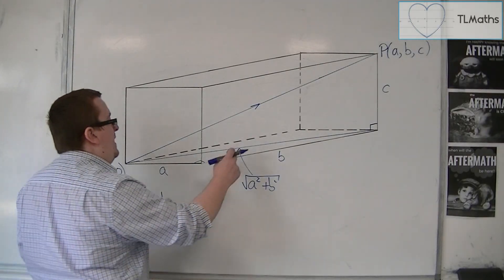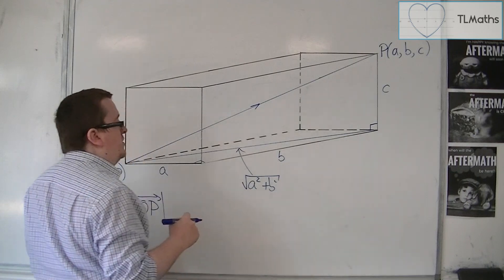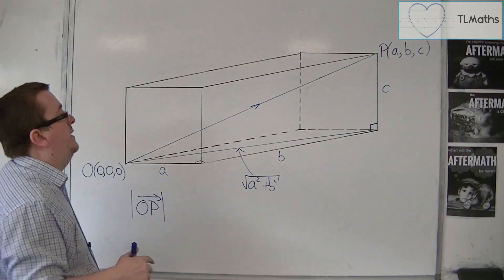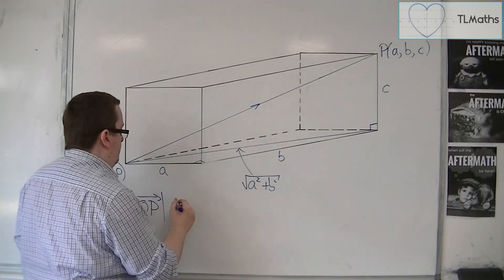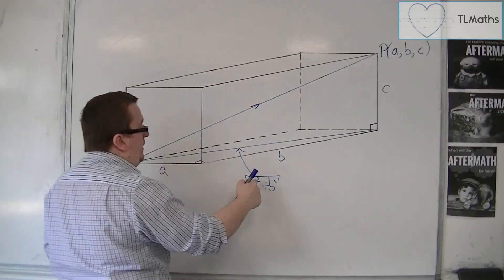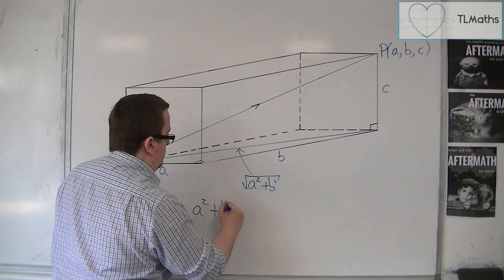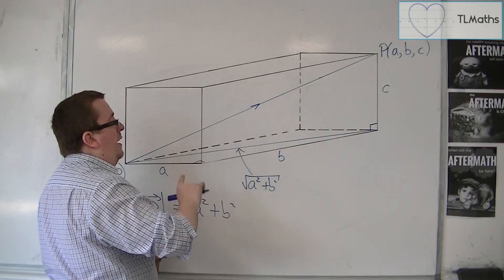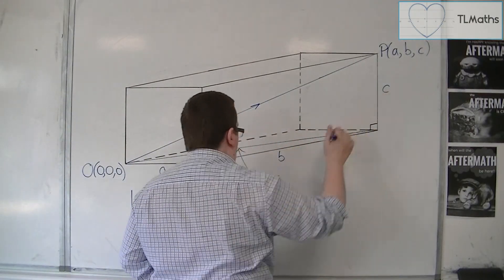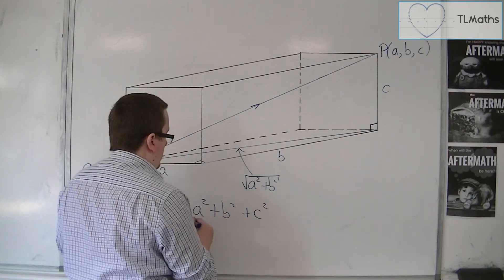So if that side length is the square root of A squared plus B squared, then this length is equal to that side squared, which is A squared plus B squared, plus that side squared, all square rooted.